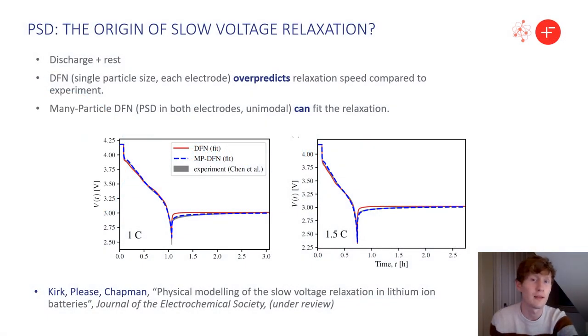This occurs commonly after a discharge, where the current is switched off and the cell relaxes to a steady state. The DFN model, the benchmark model, using only a single particle size in each electrode over-predicts this relaxation speed, which is seen in many recent studies. However, a many-particle DFN, so an extension of DFN, to have particle-sized distributions in both electrodes and at every cell location, can fit this slow relaxation, due to its larger internal concentration gradients present at cut-off.